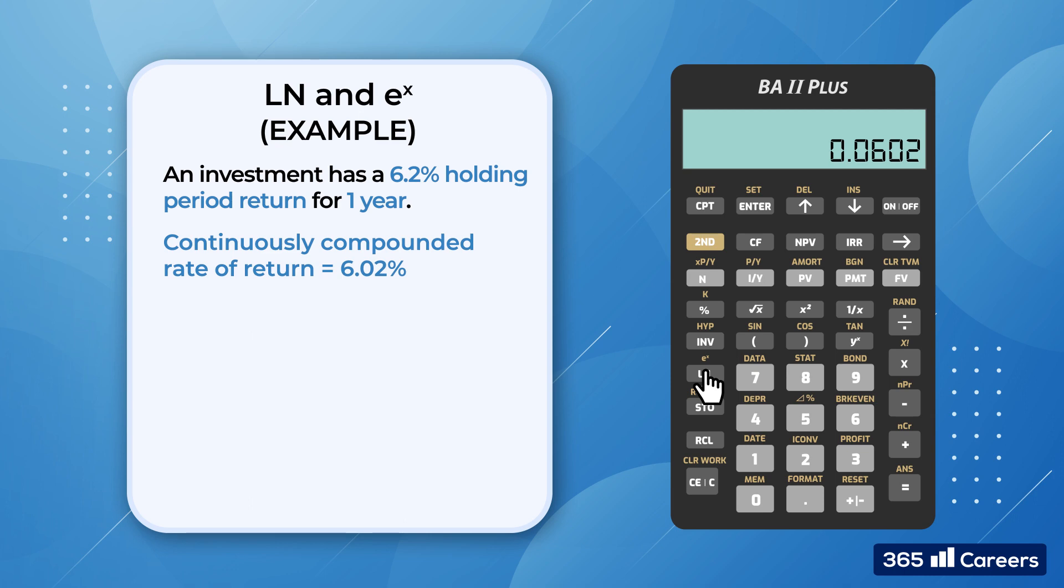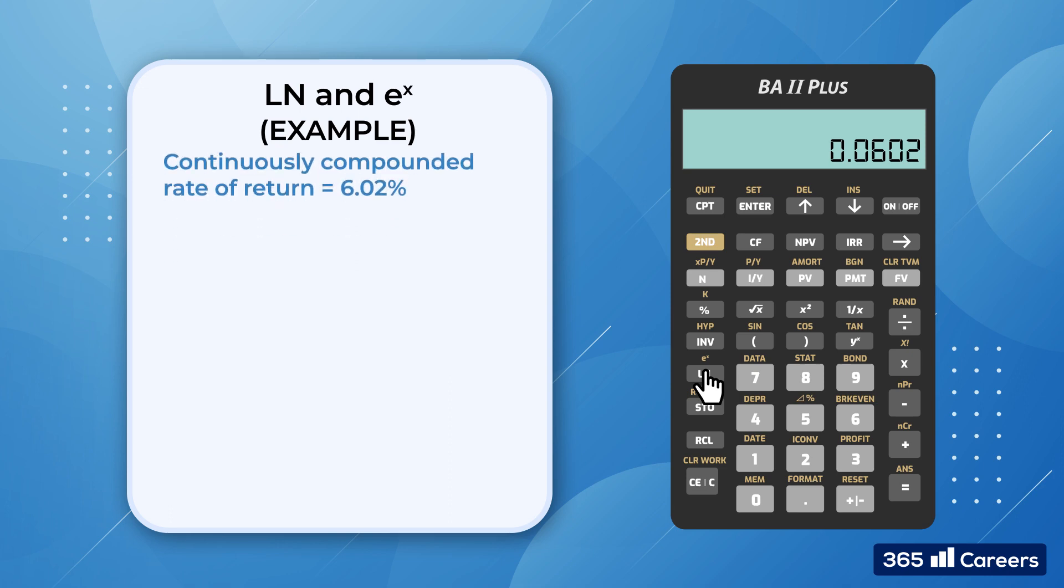Now, let's examine the second function of the LN key, e to the power of x. This function is the opposite of the natural logarithm. So, now that we know what the continuously compounded rate is, let's find an effective annual rate. Put simply, we would like to know by what percentage would a deposit grow over one year if the continuously compounded rate of return is equal to 6.02%. Let's see, we put 0.0602, then press 2nd, and e to the power of x key to obtain 1.0620. We subtract 1 to get 6.2%, which is the effective annual rate of return from before. Well done!